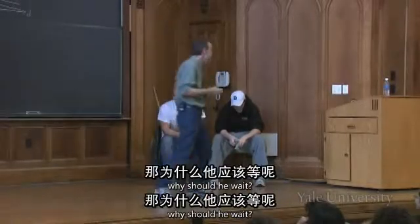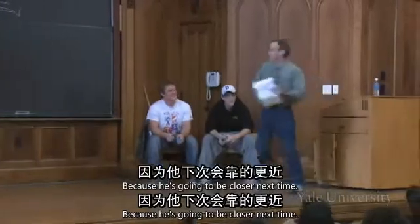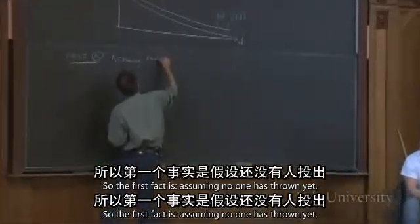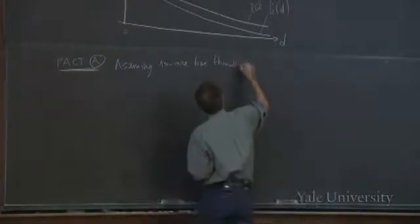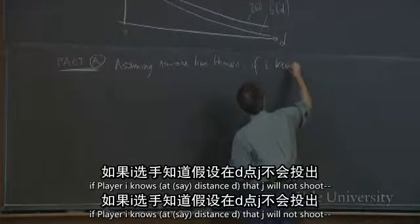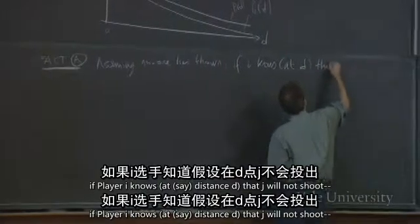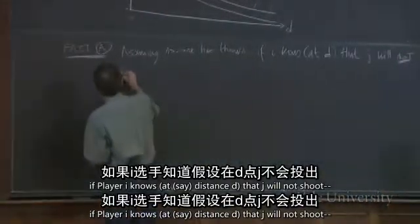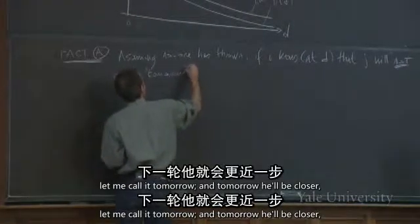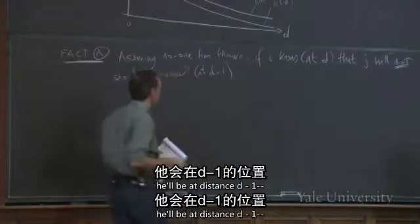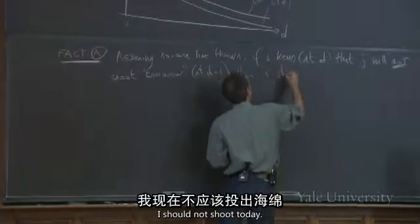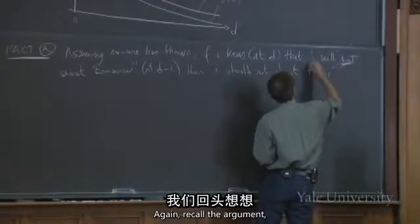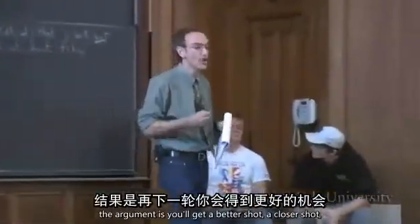He's correctly saying he should wait. Why should he wait? Because he's going to be closer next time. So the first fact is: assuming no one has thrown yet, if player I knows at distance d that j will not shoot tomorrow — and tomorrow he'll be closer, at distance d minus 1 — then, as Shebby correctly says, I should not shoot today. The argument is you'll get a better shot, a closer shot, the day after tomorrow.